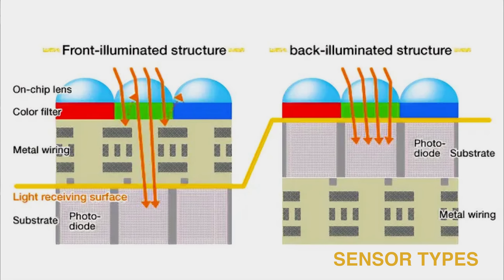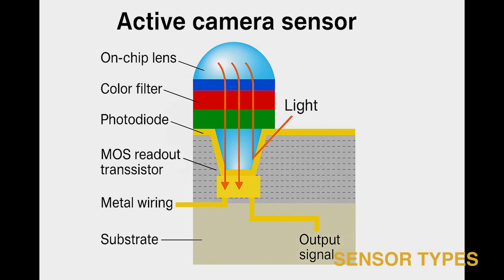But even within CMOS, there are differences. Front-side illuminated sensors route the wiring over the photosites, which limits how much light each pixel can capture. Back-side illuminated sensors, or BSI, move the wiring behind the photosites — that design gives each pixel more surface area for light, which means better low-light sensitivity and cleaner shadows. Then there are active sensors: instead of sending all the data through a shared amplifier, each pixel has its own, reducing noise and giving you finer control, especially in complex scenes with a wide range of brightness levels.